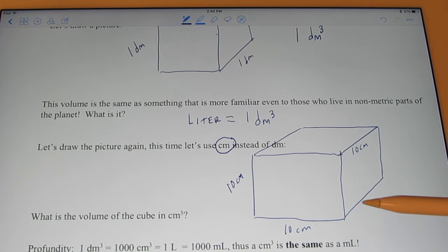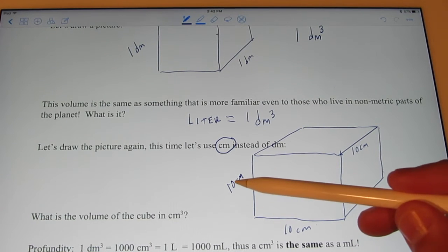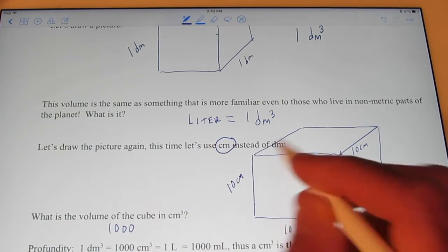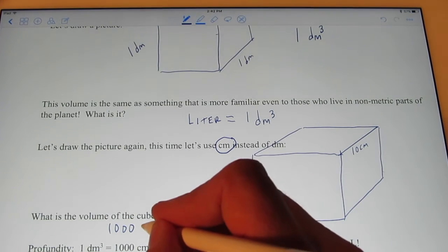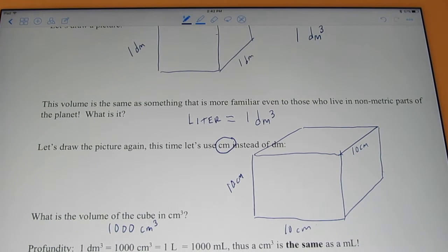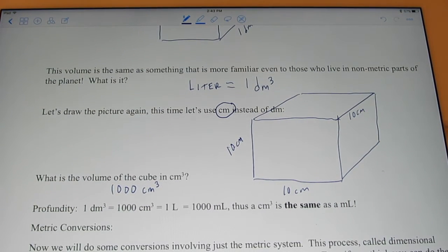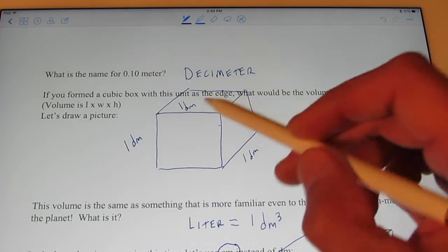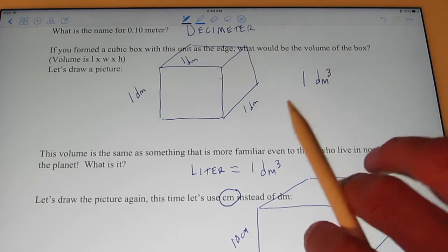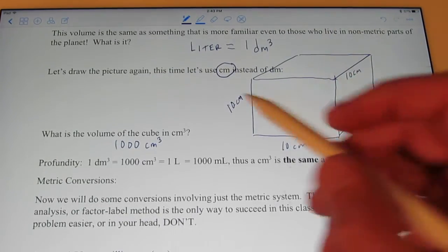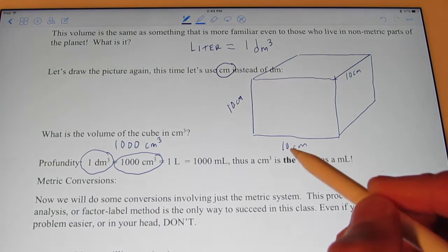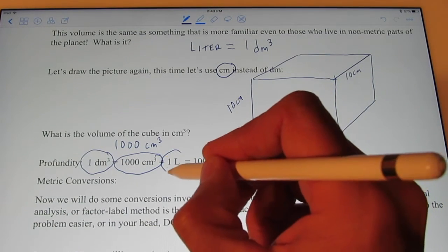So, what's the volume of that cube, but this time in cubic centimeters? Well, we have 10 times 10 times 10, which is 1000, and the unit is centimeter cubed, or cubic centimeter. So, the volume of this cube here is the same as the volume of this cube up here. However, this was measured in cubic decimeters and this one's measured in cubic centimeters.